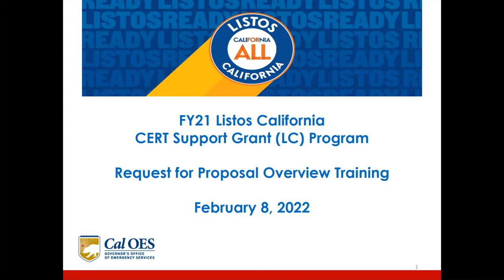All questions concerning the RFP, the process, or programmatic issues must be submitted in writing by email to listosgrants@caloes.ca.gov. We are only able to respond to technical questions about the RFP during the time between the publication date and the completion of the RFP process. With that said, I'm going to hand it over to Waheeda, who will present the request for proposal overview training.